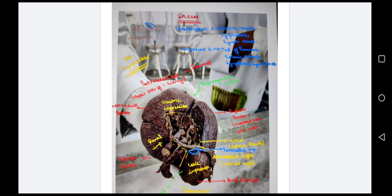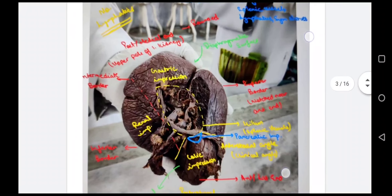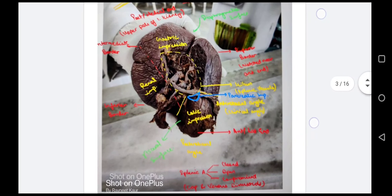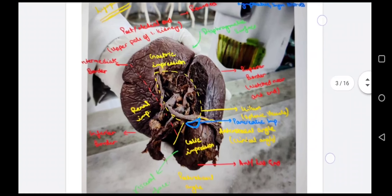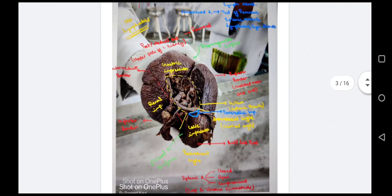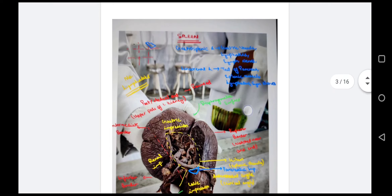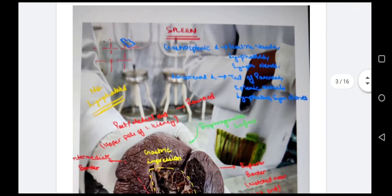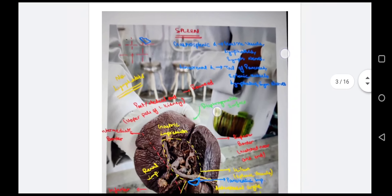There are three borders: the superior border, which is notched near the anterior end; the inferior border; and the intermediate border, which runs from the hilum of the spleen along the visceral surface. The spleen has two ligaments: the gastrosplenic ligament and the lienorenal ligament. The gastrosplenic ligament contains short gastric vessels, lymphatics, and lymphatic nerves. The lienorenal ligament contains the tail of the pancreas, splenic vessels, lymphatics, and lymphatic nerves.